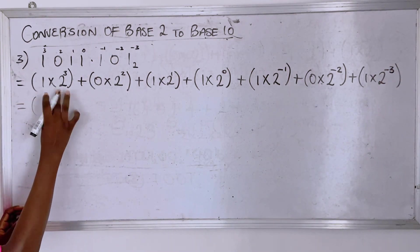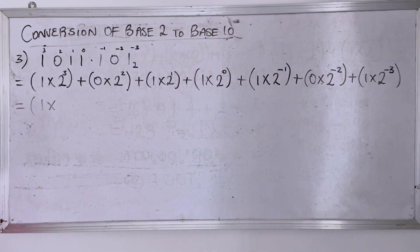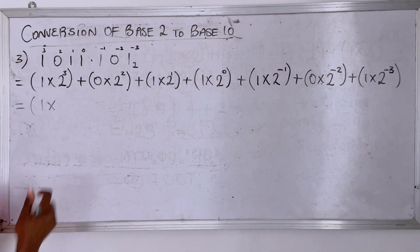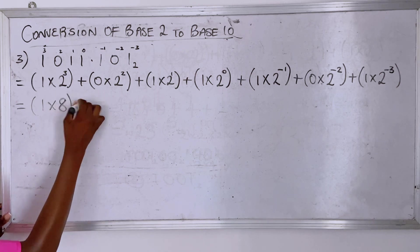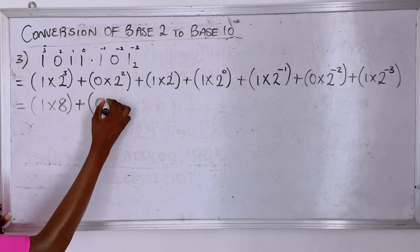We've done this before. To raise to the power of three means two in three places, that's two times two times two which is eight. Then you have zero times four.